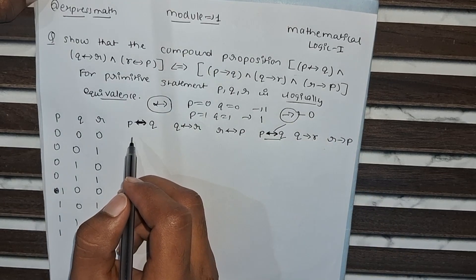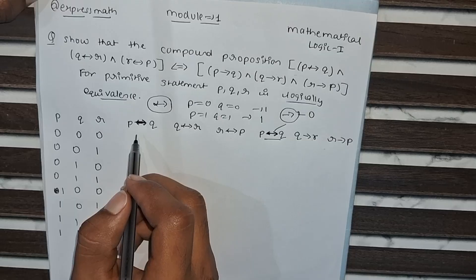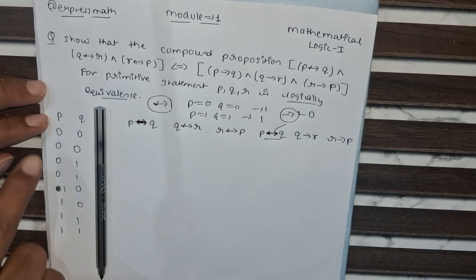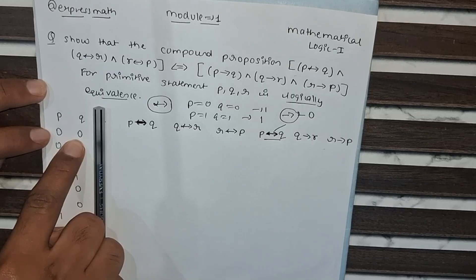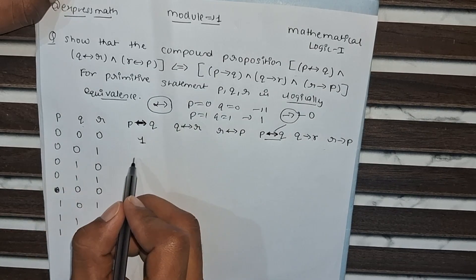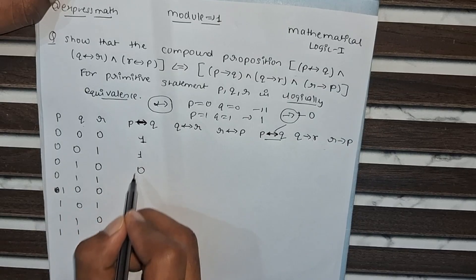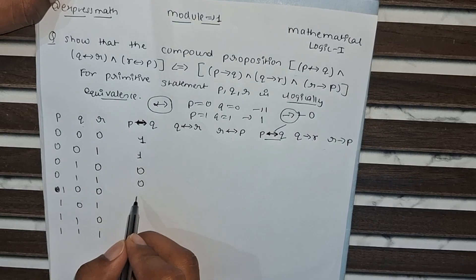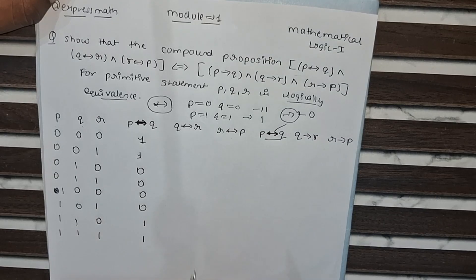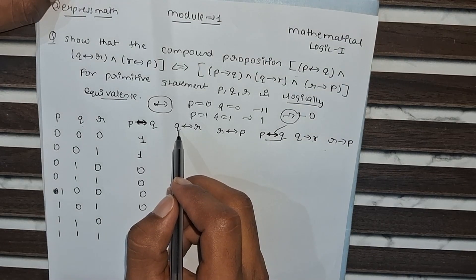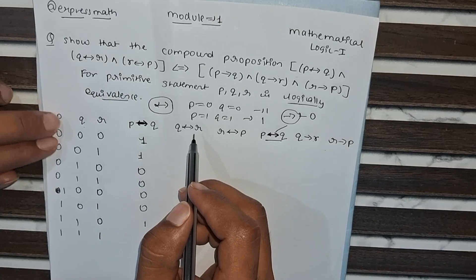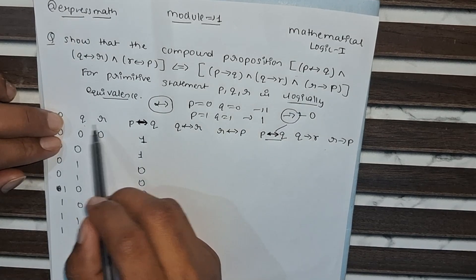Now we are looking at biconditional. We have R. Now go for P and Q — if both values are 0, then it will be 1. Computing P biconditional Q gives values: 1, 0, 0, 0, 0, 0, 1, 1. Similarly, for R biconditional P, we compare P and R. Then for Q biconditional R, we compare Q and R.